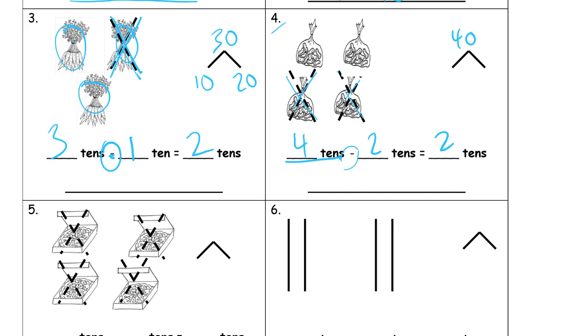Forty, and our parts are, how much was crossed out? Two tens, that's 20. And how much was left? Twenty, so there's our whole and our parts for our number bond.